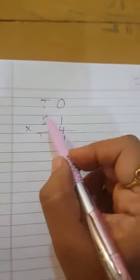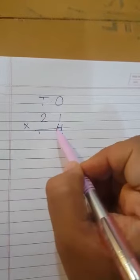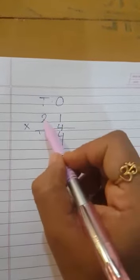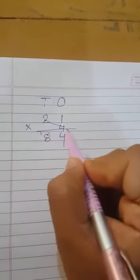Now, multiply the digit in 10s place with the multiplier 4. That is 2 into 4. 2 4s are 8.